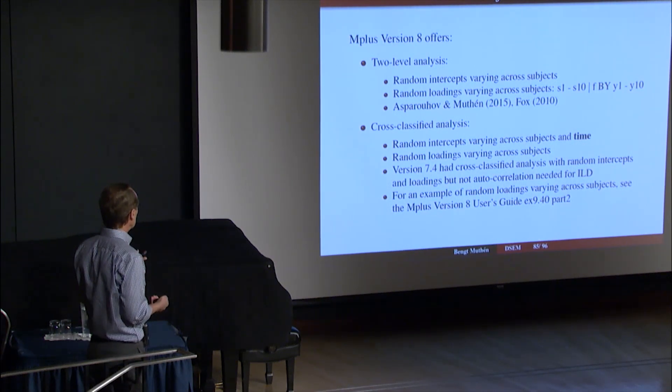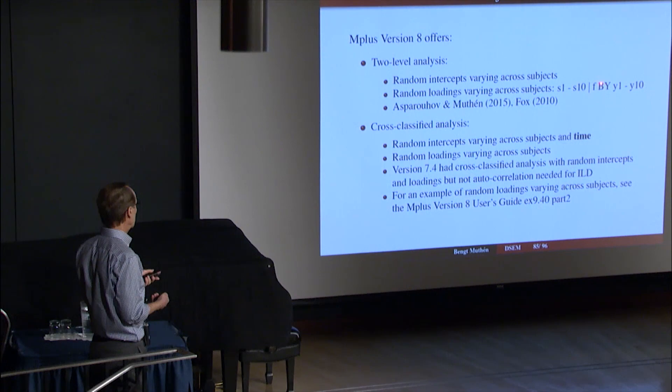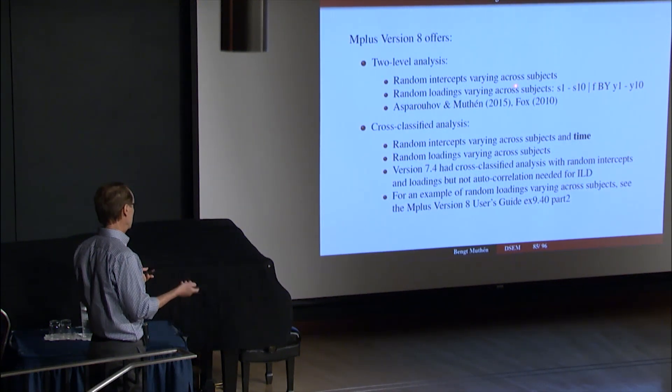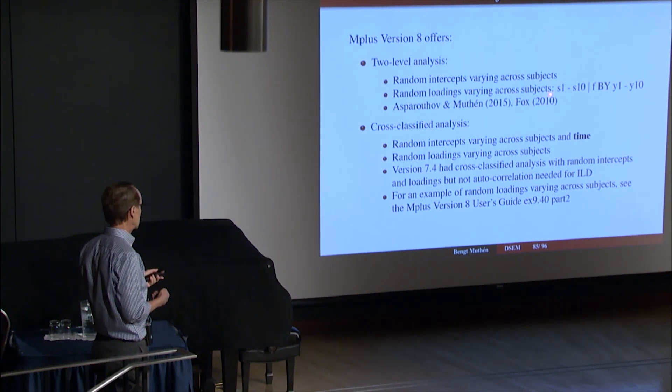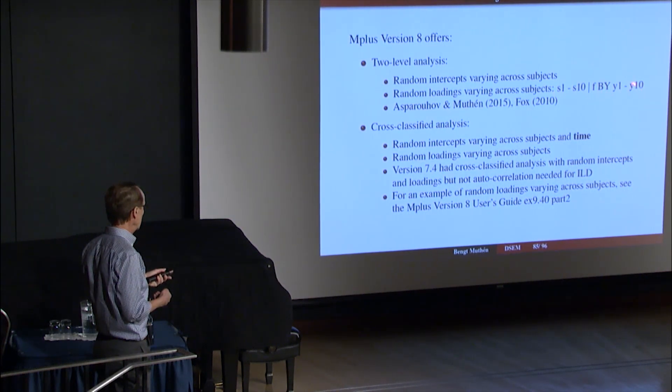So just a summary of this, what Mplus version 8 offers is two-level analysis with random intercept that can vary across subjects. I'm talking about factor analysis now. Random loadings that can vary across subjects using a bar statement for a set of slopes f by y1 to y10, so the slopes are the loadings here.